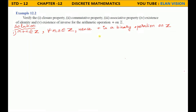Verify the set Z under addition. Closure property: take 2 elements m and n belonging to Z. The operation is plus, so m plus n. The result also belongs to Z — this is true, since any two integers add to an integer. Hence addition is a binary operation on Z. Closure property is true.